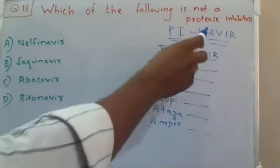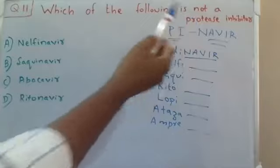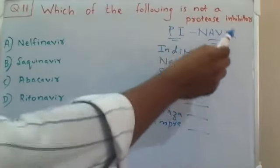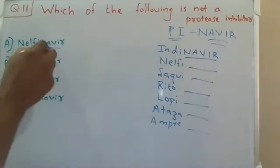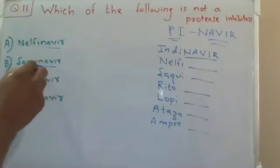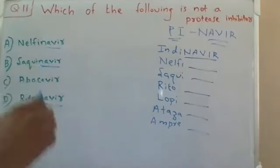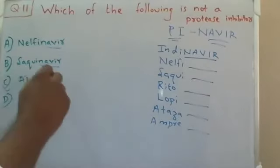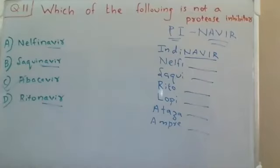Whenever a question asks which drug is or is not a protease inhibitor, remember that protease inhibitors end with '-navir'. Looking at the choices: nelfinavir ends in '-navir', saquinavir ends in '-navir', ritonavir ends in '-navir' — all are protease inhibitors. Abacavir is NOT a protease inhibitor, so the correct choice is abacavir.